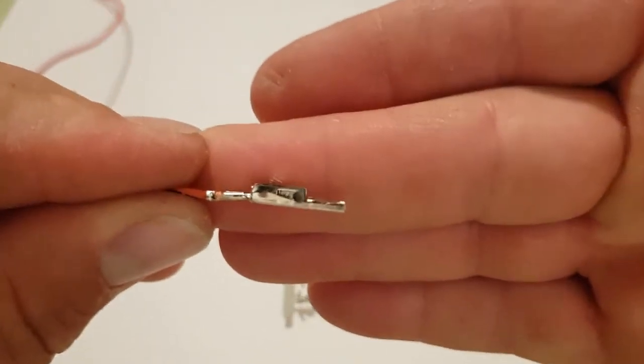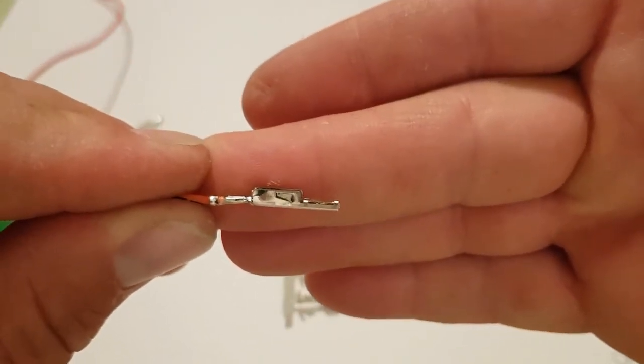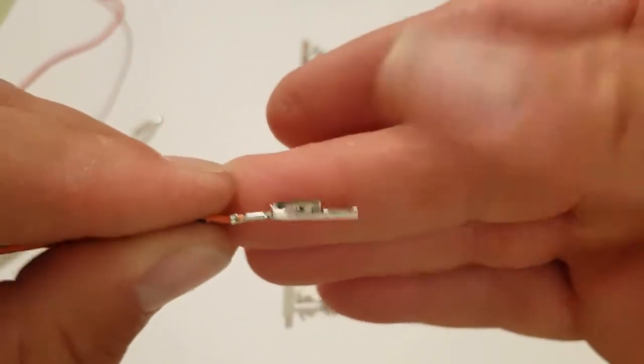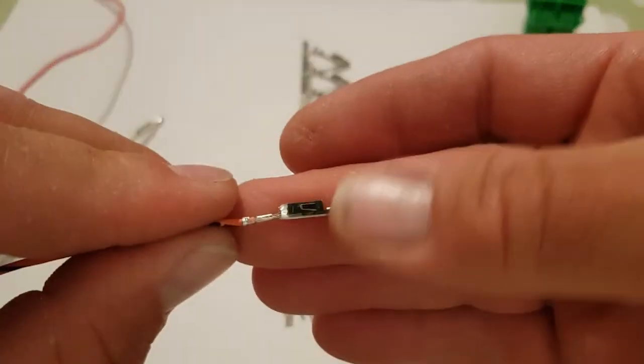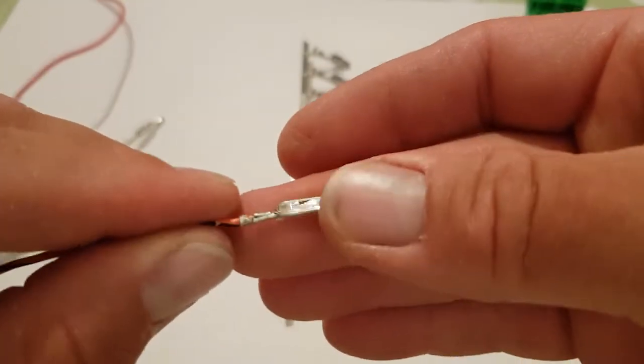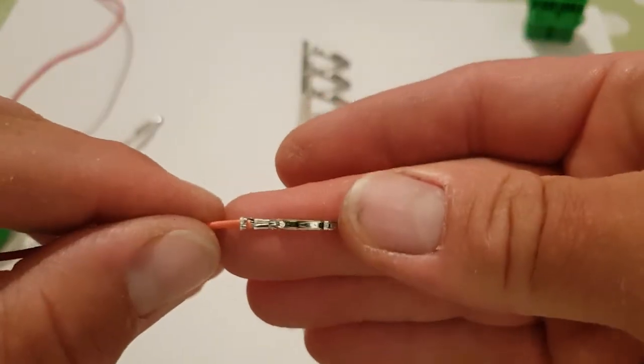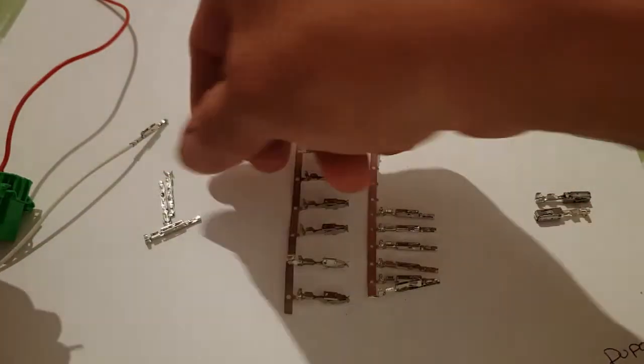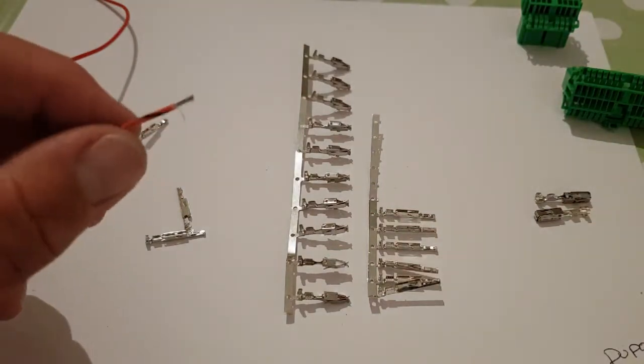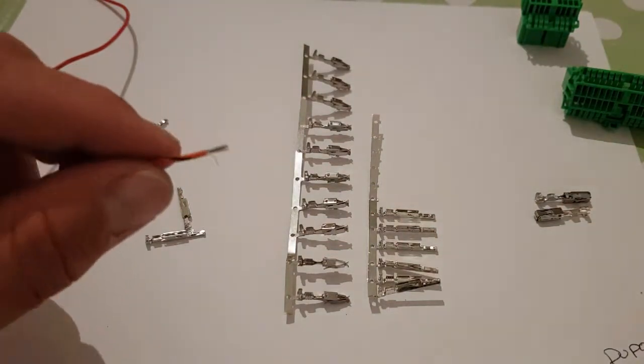So that is how you crimp an SN28 or a DuPont pin on the end of a wire the correct way. There's plenty of other videos out there showing you how to do it, but that's the way that I do it. I'm an auto electrician and I do this daily. Thanks for tuning in.